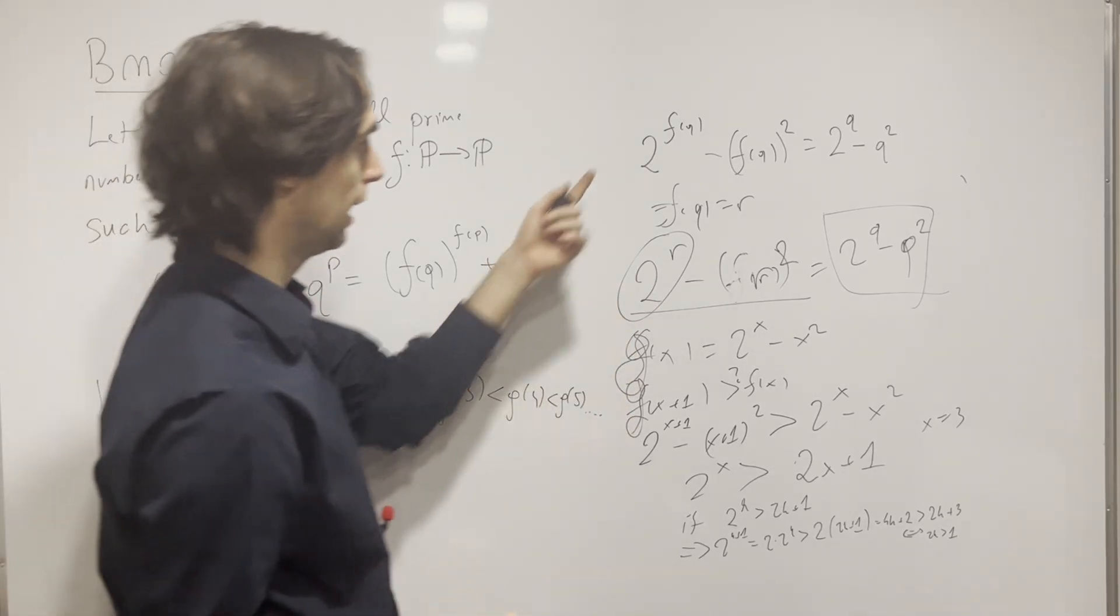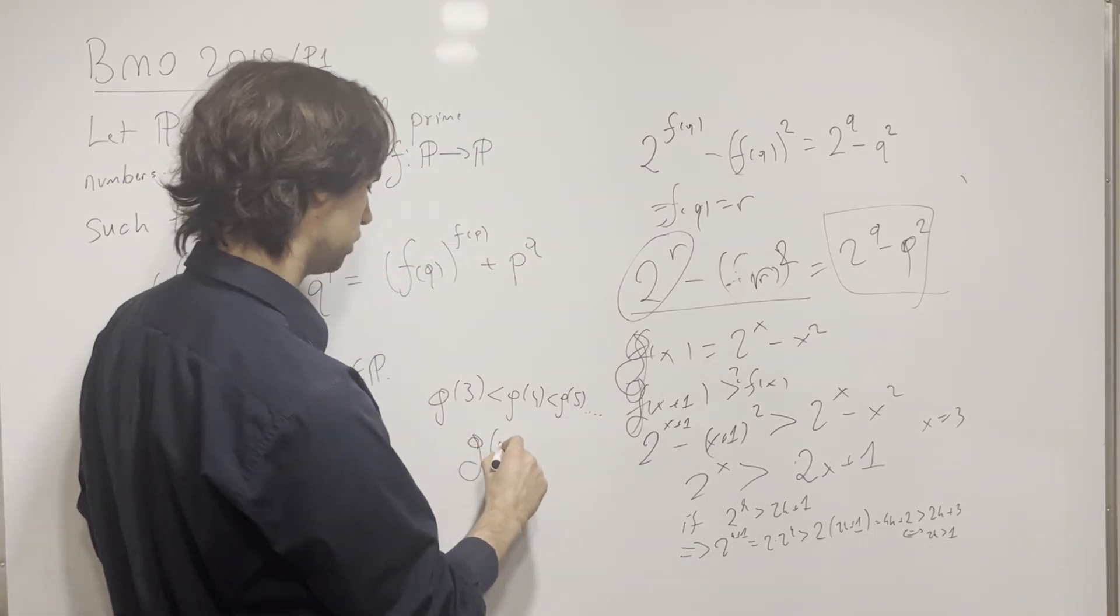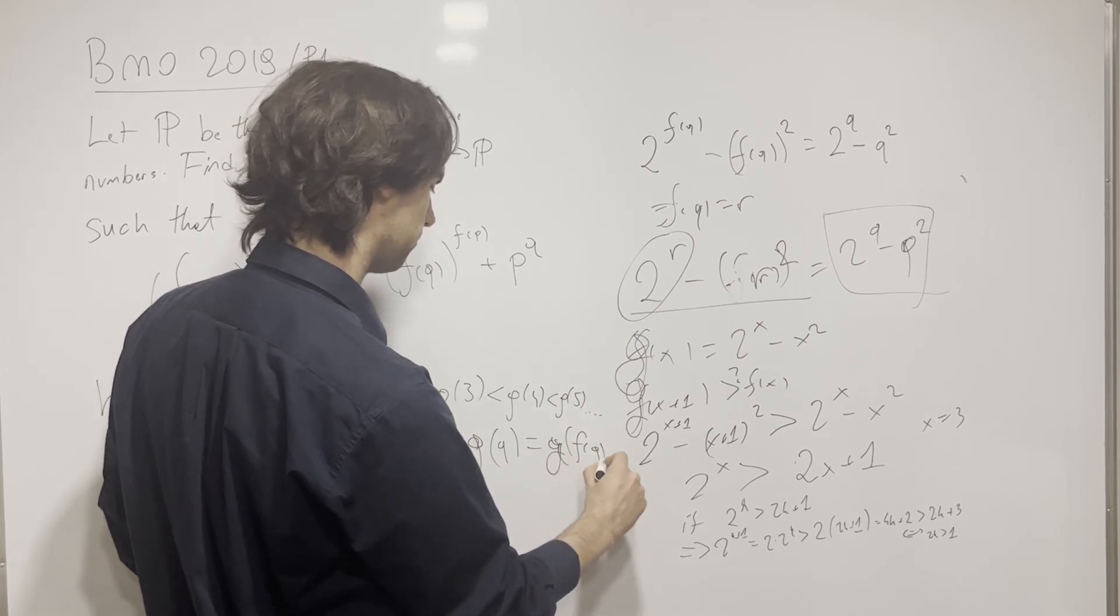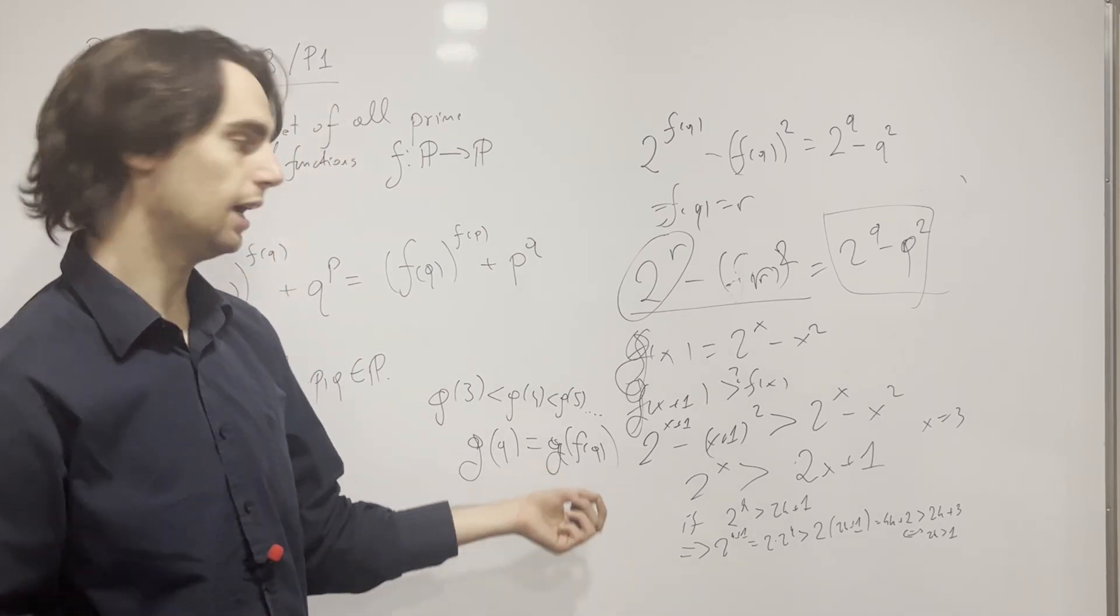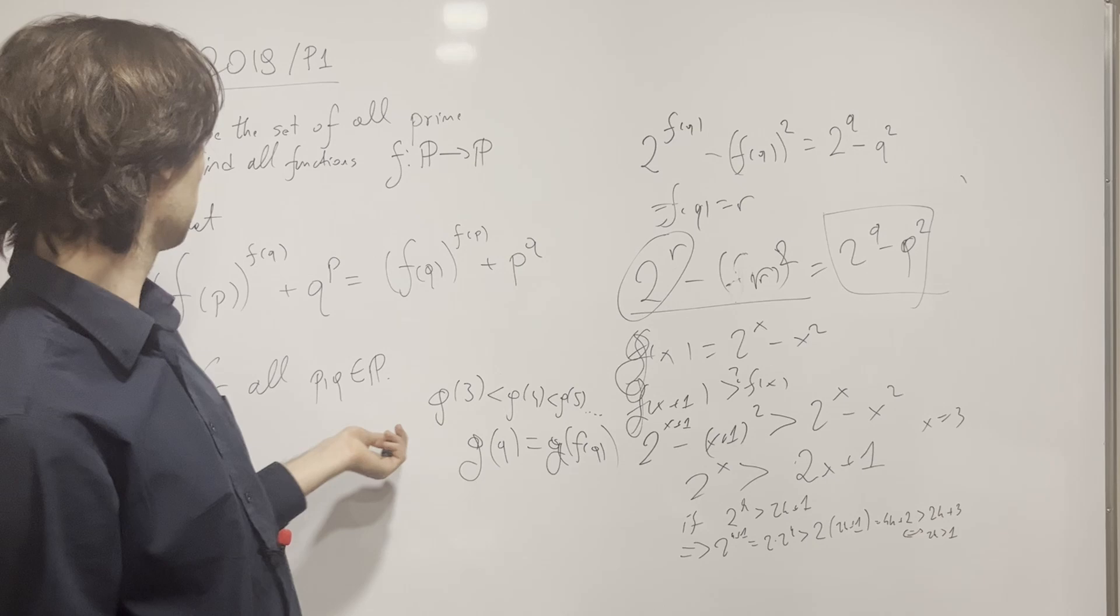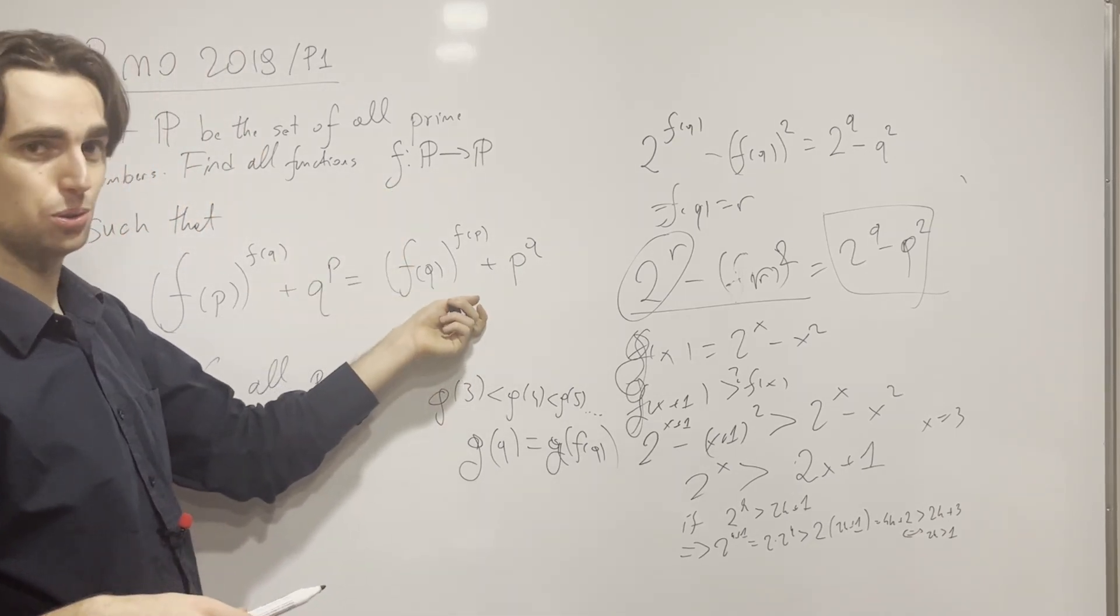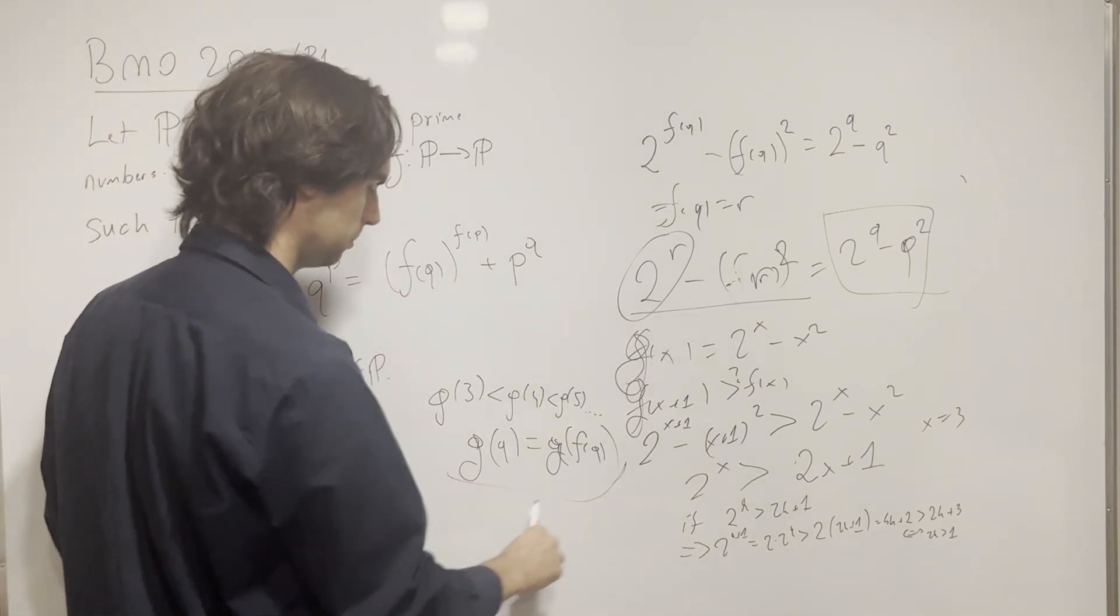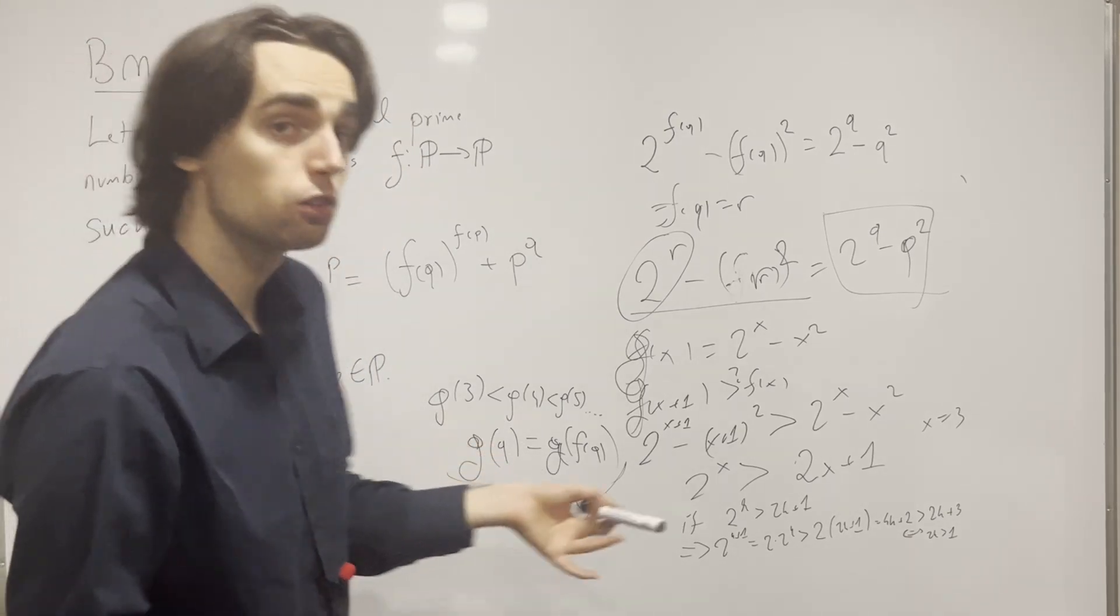Starting from 3, we're going to get that, call this function g(x) instead of f(x)—I just realized I'm using the same f as I'm using here. We know that g(3) < g(4) < g(5), and so on. We have here that g(q) = g(f(q)), and now this can either imply that f(q) = q or that f(q) = 2. However, due to the injectivity, no other prime can go to 2, and it follows from here that q needs to be equal to f(q). This finishes up the problem.